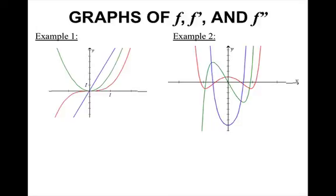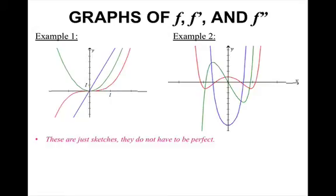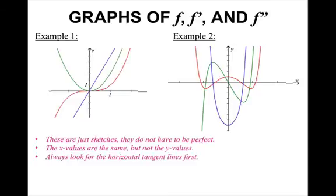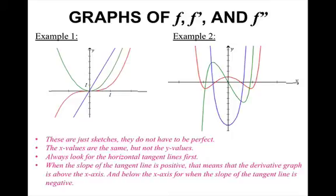A couple of things to keep in mind when sketching the graphs of f, f prime, and f double prime: these are sketches — they don't have to be perfect — which means you don't have to necessarily know the y value. The x values are the same, but not the y values. Always look for the horizontal tangent lines first. When the slope of the tangent line is positive, the derivative graph is above the x-axis, and below the x-axis when the slope of the tangent line is negative.